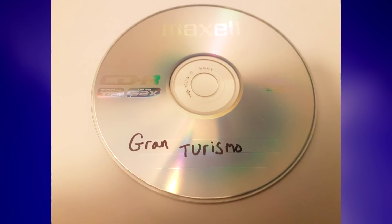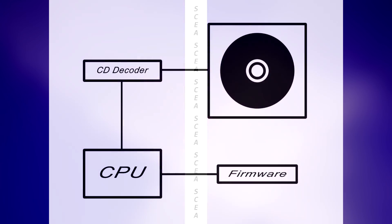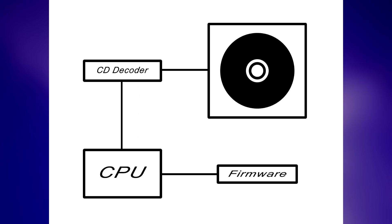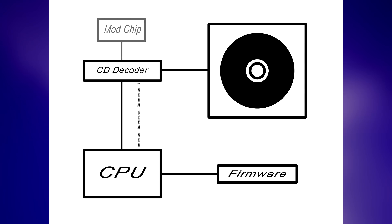How does it do this? Well, it spoofs the text that the wobble is decoded into. The PlayStation's firmware doesn't look for the wobble directly. Rather, it looks for the text being sent from the disk decoding circuitry. The mod chip sits on this circuit and makes sure that the right signal is sent, no matter what's on the disk. This means you can boot games from any region and also boot games burned onto a recordable CD.